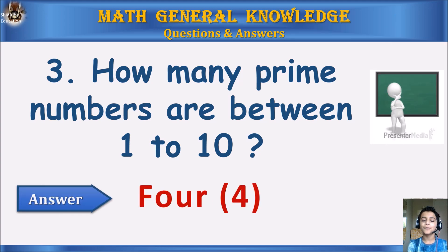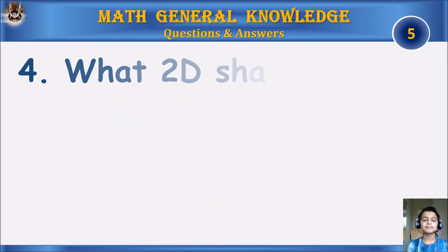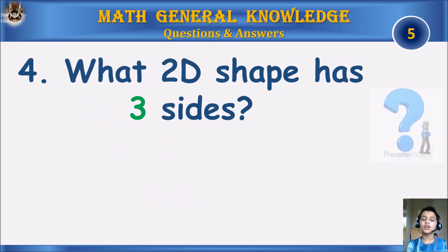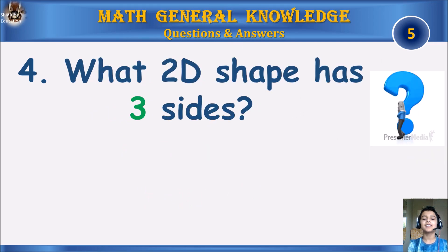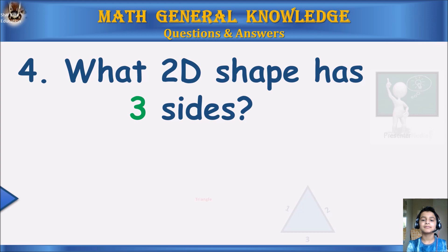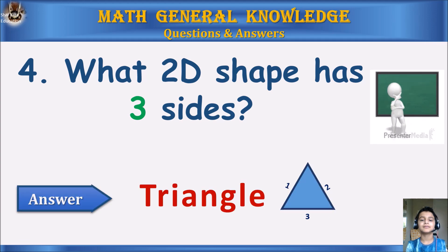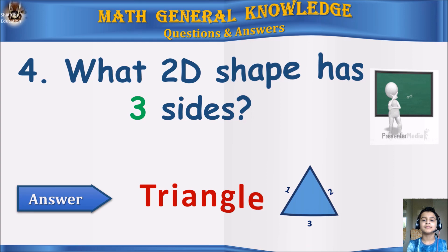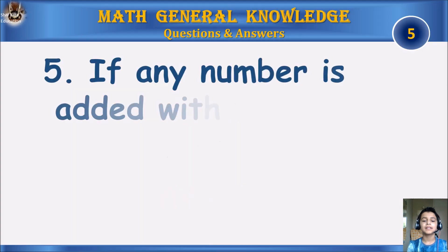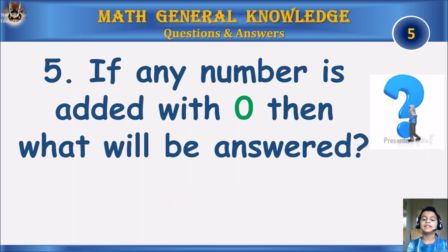Answer: 4. What 2D shape has 3 sides? Your time starts. Answer: Triangle. If any number is added with zero, then what will be the answer? Your time starts.